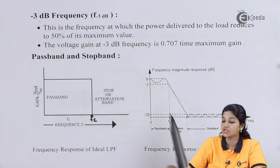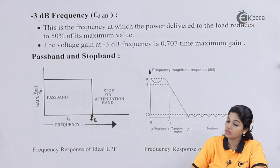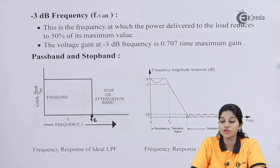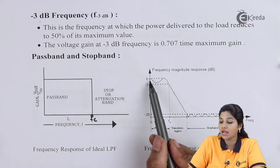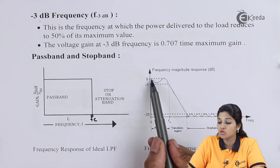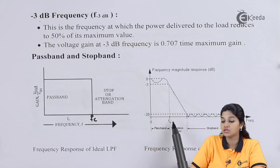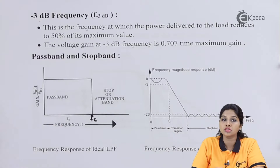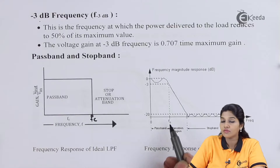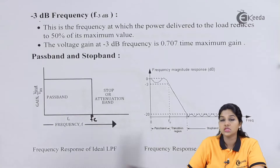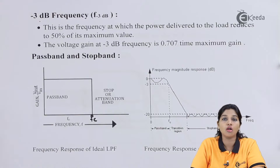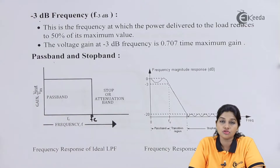A practical response of a low pass filter looks somewhat different. The cutoff frequency FC is taken at the minus 3 dB point from the maximum gain. Due to practical parameters, some ripple or variation is always present in the pass band. From 0 to FC, the filter passes frequencies — this is the pass band. After FC, the filter stops frequencies — this is the stop band.